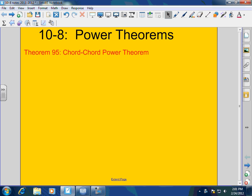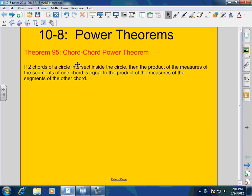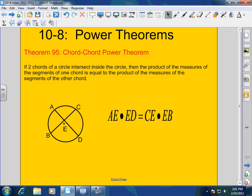So Theorem 95, we call it the Chord-Chord Power Theorem. The Chord-Chord Power Theorem states that if two chords of a circle intersect inside the circle, then the product of the measures of the segments of one chord is equal to the product of the measures of the segments of the other chord. A lot of times in geometry, words are really nice and it's very important, but visuals are the best.